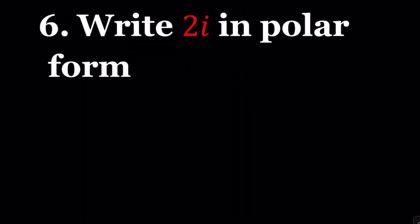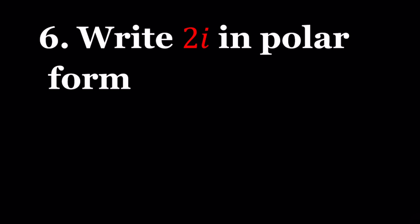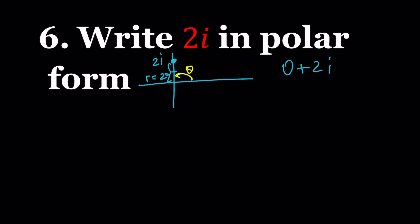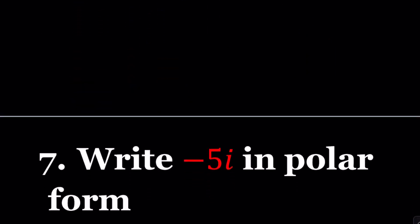Let's take a look at number 6. We're supposed to write 2i in polar form. If you think about how to plot 2i, that is equivalent to 0 plus 2i, so it's the point 0 comma 2 on the positive imaginary axis. r equals 2 here, and theta is π over 2. So 2i can be written as 2 times e to the power i times π over 2. Remember, e to the i π over 2 is always equivalent to i.